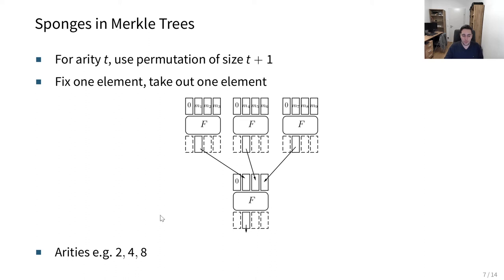In the paper, we focus on arities of, for example, 2, 4, or 8. All this decides at the end how efficient the resulting proof is in this Merkle tree. What is important here is the efficiency of this F, which is essentially our construction.